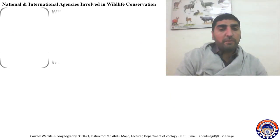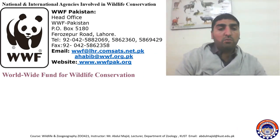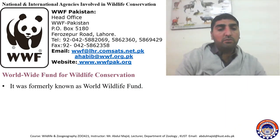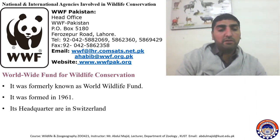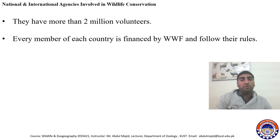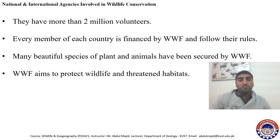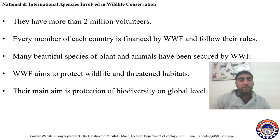Now we will discuss international organizations involved in wildlife conservation. The first international agency is the WWF — World Wide Fund for Nature — formerly known as the World Wildlife Fund. It was formed in 1961 and its headquarters are in Switzerland. They have more than two million volunteers throughout the world. Every member country is financed by WWF and follows their rules. Many beautiful species of plants and animals have been secured by WWF, which aims to protect wildlife and threatened habitats. Their main aim is the protection of biodiversity on a global level.